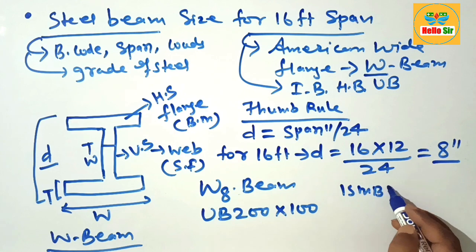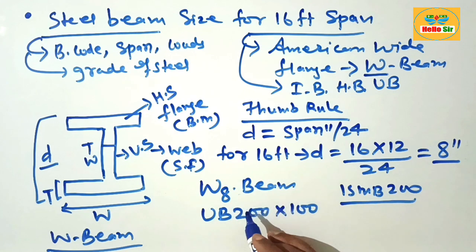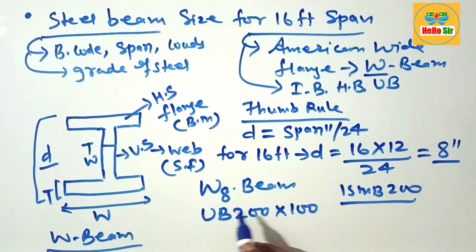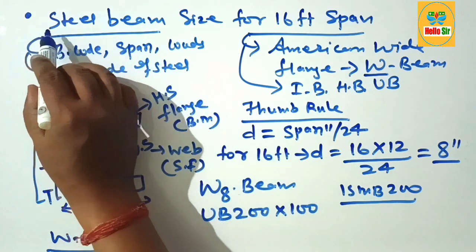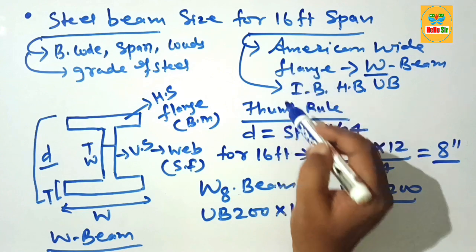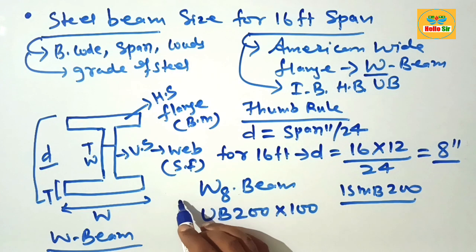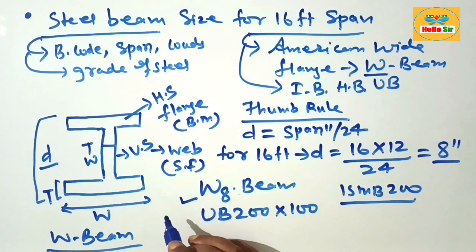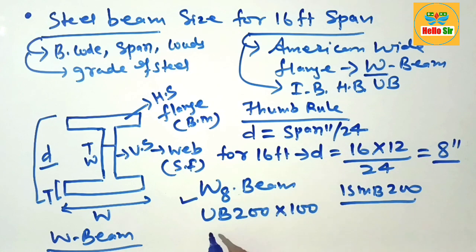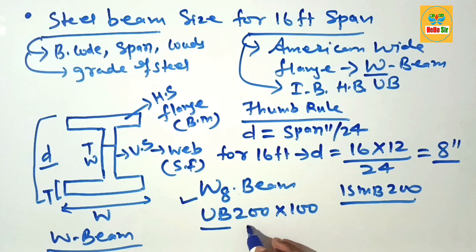There are different names as per different practice. Your question was what size steel beam do I need for 16-foot span? You need W8 beam which is American wide flange beam or UB 200 into 100 beam. This is depth of the beam and this is width of the beam. Thank you.